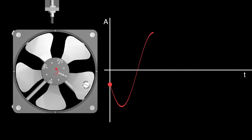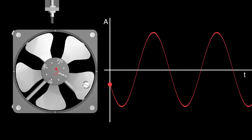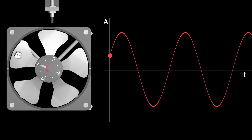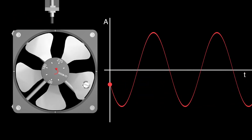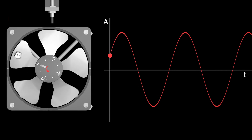Now please look at what time the maximum of positive displacement occurs and notice where the heavy spot is at that moment. You can see that the heavy spot is in the upper position. We can say that where the heavy spot is during rotation, there is also the maximum of displacement. In other words, the displacement is in phase with the heavy spot position.